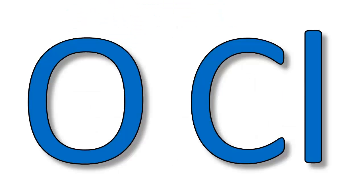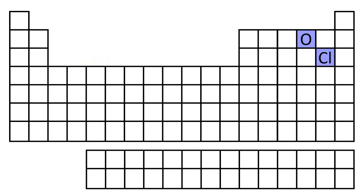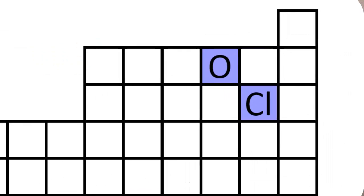What if we were trying to compare oxygen and chlorine? If we take a look at their positions on the periodic table, we can see that chlorine lies below oxygen, which implies that chlorine has a larger atomic radius than oxygen — but chlorine is also to the right of oxygen, which implies that chlorine's atomic radius is smaller than oxygen's. So the atomic radius trend doesn't work when comparing these two elements, and there are plenty of other examples where it doesn't work, but it's still pretty useful.